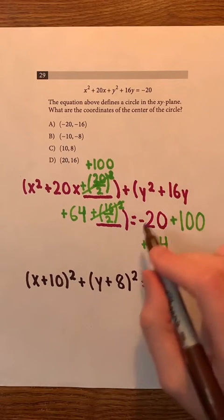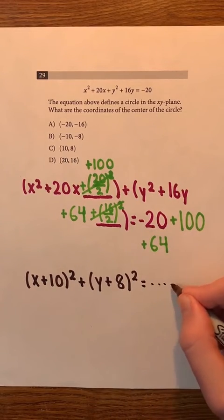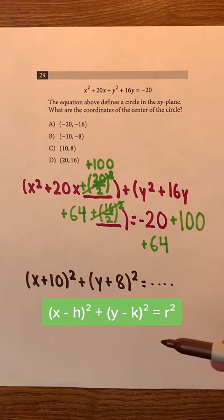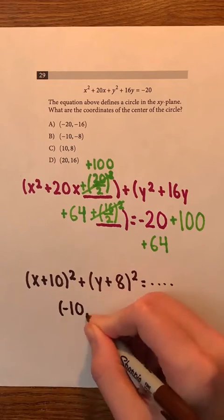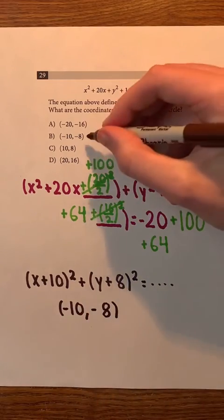Since we're finding the center, we can ignore the other side of the equation. Remember that in the standard form of the equation of a circle, h k is the center. Therefore, in this situation, negative 10, negative 8 is the center of the circle, which is b.